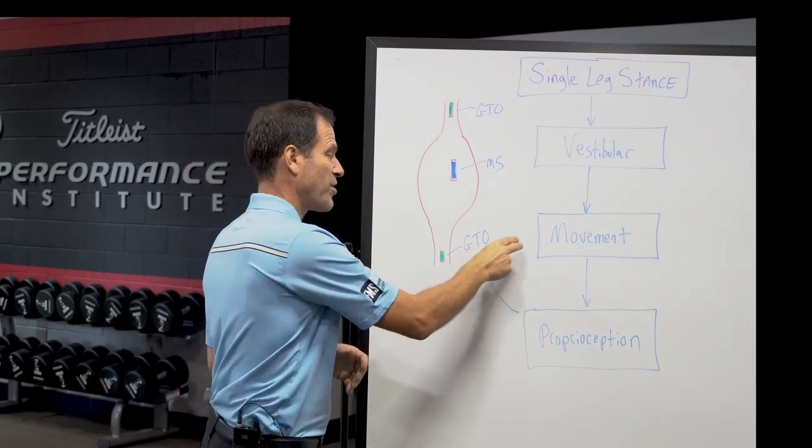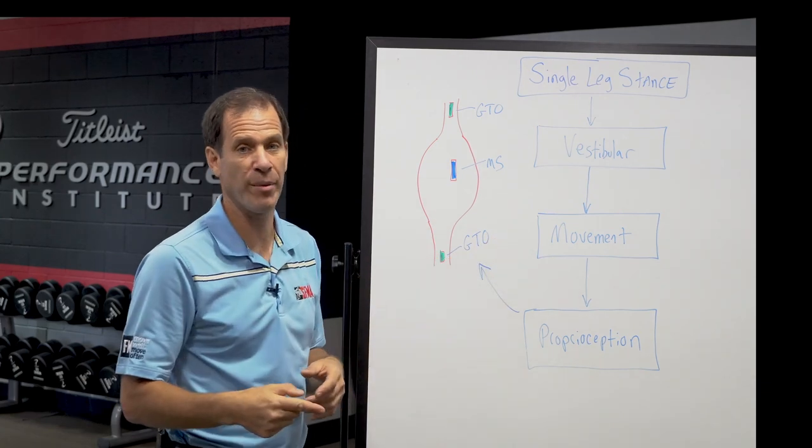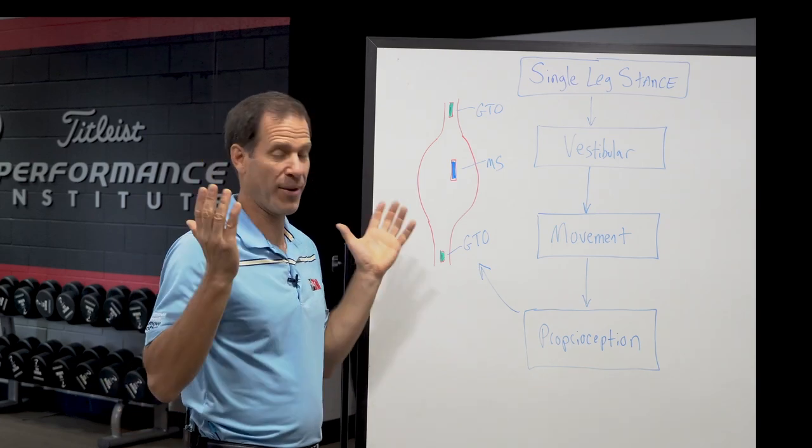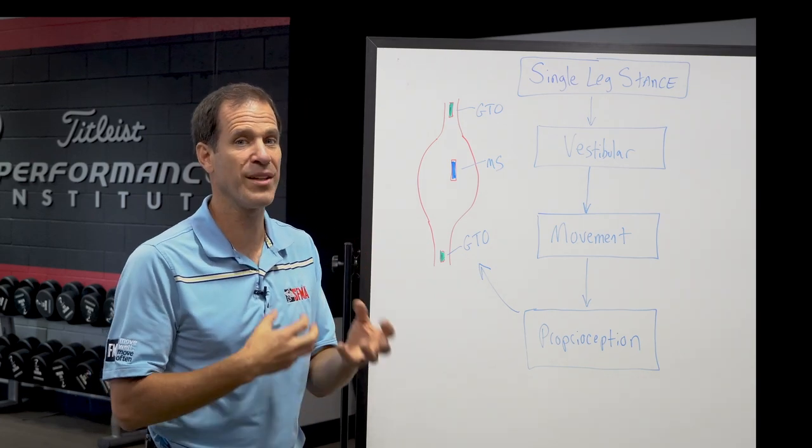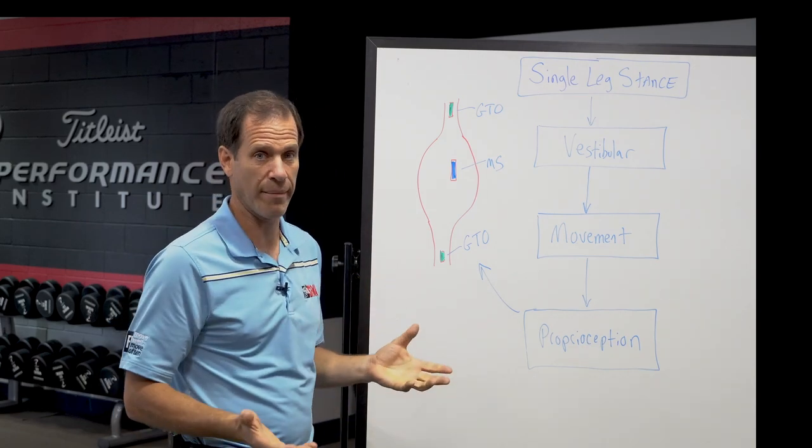So what we do is we go check movement. If movement's dysfunctional, it's not moving, we reestablish movement, and then we retest. If their balance is now good, congratulations, there wasn't a proprioception problem. They just weren't using the joint. They weren't stimulating the muscle. And we see this the majority of the time.